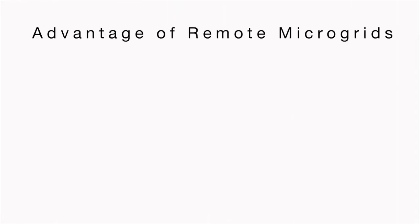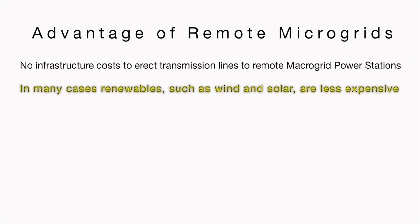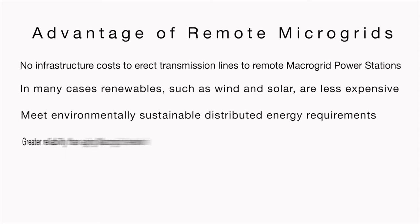An advantage of microgrids over the macrogrid includes no infrastructure costs to erect transmission lines to the remote macrogrid. In many cases, renewables such as wind and solar are less expensive solutions. They meet environmentally sustainable distributed energy requirements, and they have greater reliability than the aging macrogrid network.